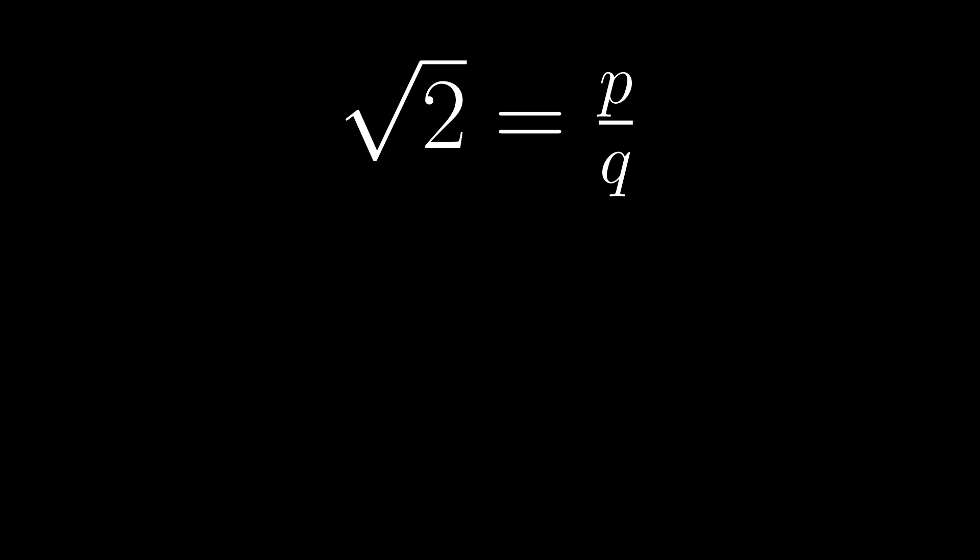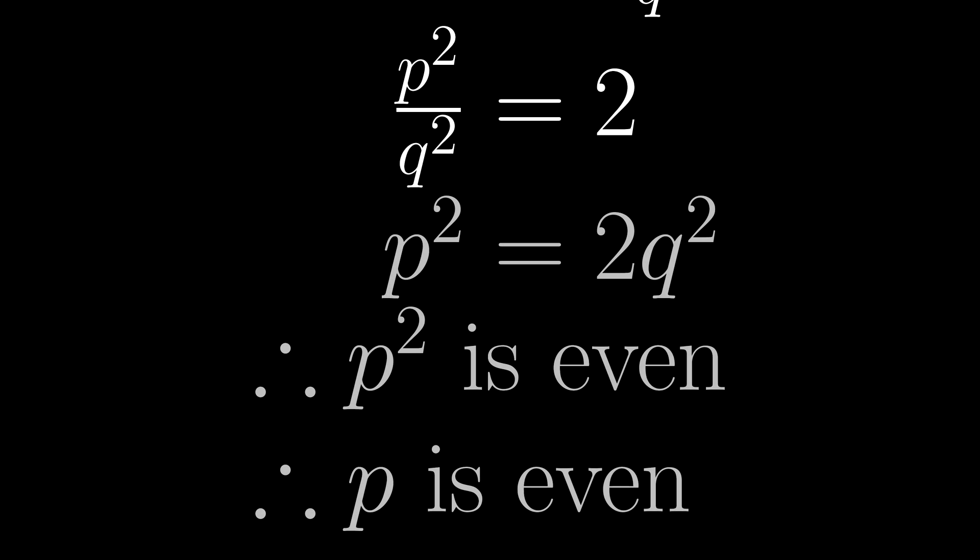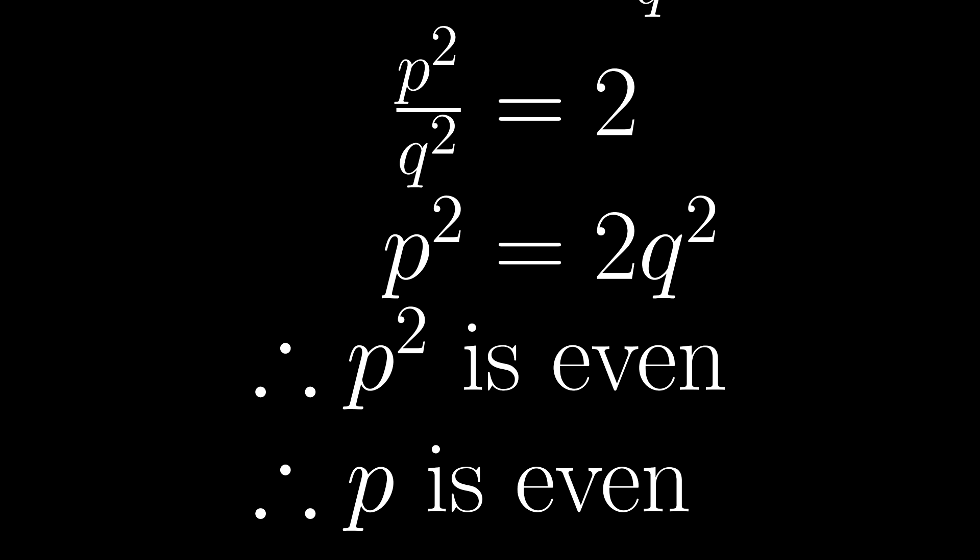Here's the quintessential example. We'll prove the square root of 2 is irrational by attempting to prove that it's rational. So if the square root of 2 is rational, then by definition it can be expressed as a fraction P over Q, where P and Q are integers with no common factors. Square it, and P squared over Q squared equals 2, or in other words, P squared equals 2Q squared, meaning that P squared is even, therefore P is even.